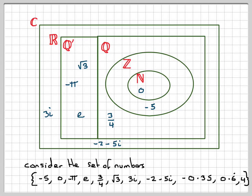Minus 0.35, well that is a fraction, so it's rational. 0.6 recurring, all recurring decimals can be written as a fraction. 0.6 recurring is 2 thirds. And the number 4 would go in there.